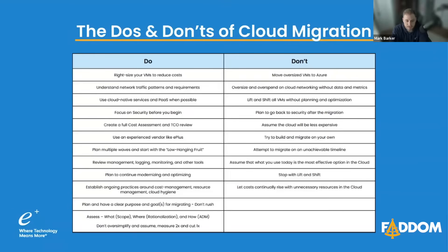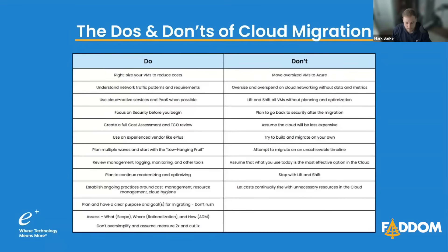The don'ts are basically the opposite of the do's. You don't want to move oversized VMs to Azure — make sure they're optimized. You don't want to oversize and overspend on cloud networking without data and metrics, which you'll get with Fathom. Don't lift and shift all VMs without planning and optimization — that's going to cause incredible cost in the cloud. Do not plan to go back to your security architecture after you migrate, and don't assume the cloud will be less expensive, because in almost every instance, it will not.